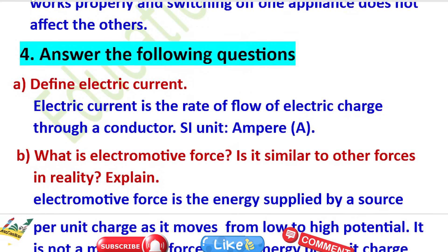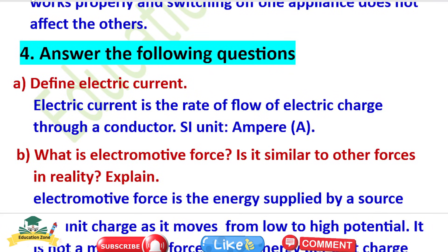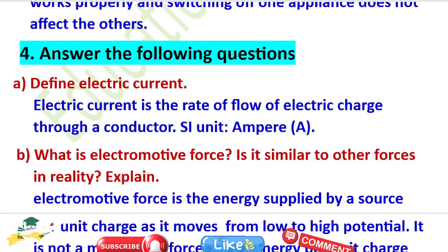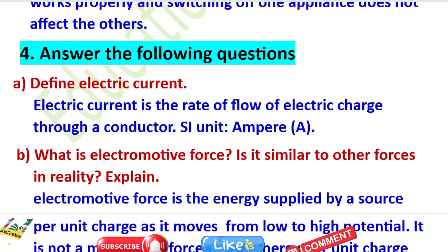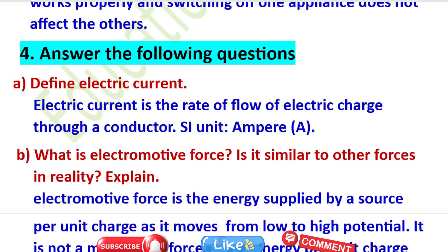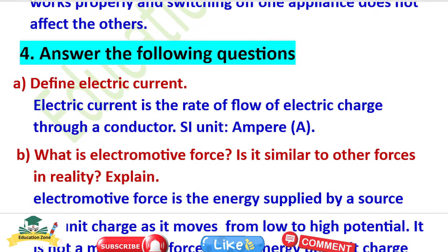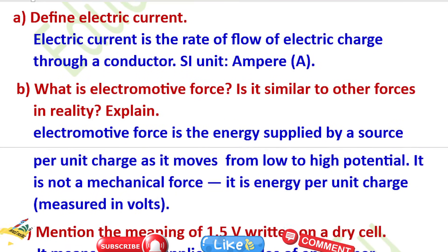Answer the following questions. Question A: Define electric current. Electric current is the rate of flow of electric charge through a conductor. Its unit is ampere.